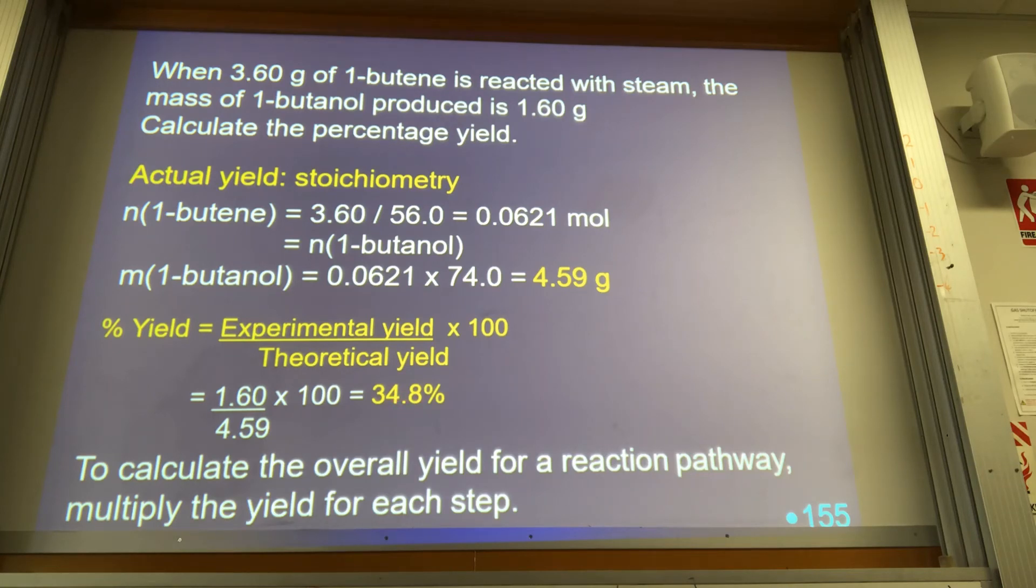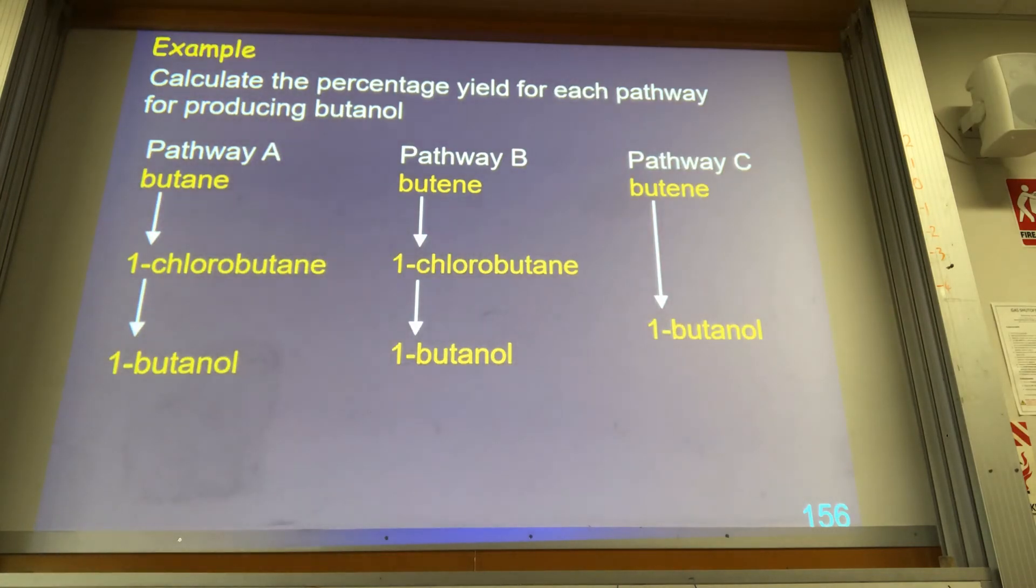So that's a pretty poor yield. Now we do that for each step in the reaction pathway, multiply the yield for each step, and we end up with results like this. So for pathway A, butane to chlorobutane to 1-butanol: 60 percent yield, that's really good. 85 percent yield here, you would expect a good yield for that step. Multiply the two together and you get an overall yield of 51 percent.